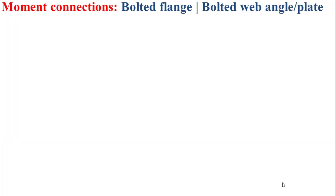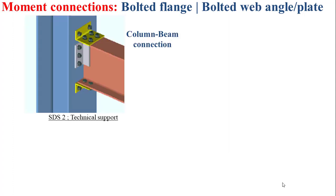Now I'll introduce the second type of moment connection, which can be called bolted flange, bolted web angle plate. Here, angle plate means that the connecting element can be a mixture between angles and plates. As depicted in the figure, we have a beam as child member connected to a column as parent member using angles bolted to the flanges of the beam and welded to the web of the beam. These angles are also bolted to the flange of the column. Note that the angle can also be bolted to the web of the beam instead of being welded.